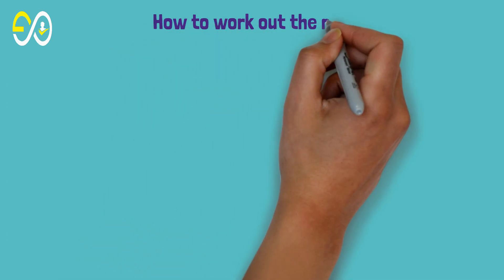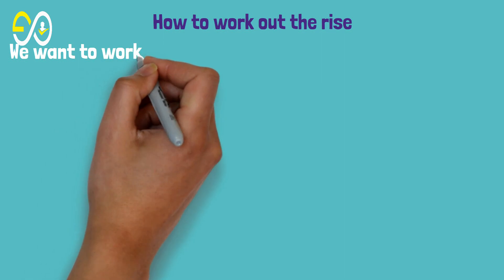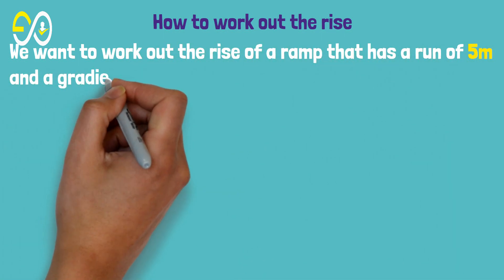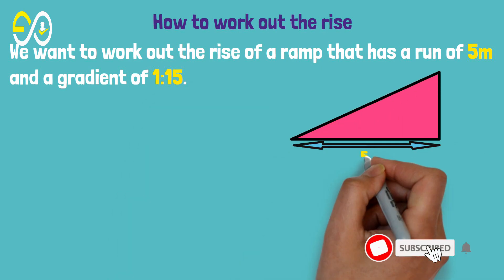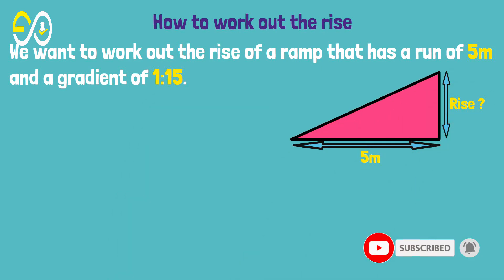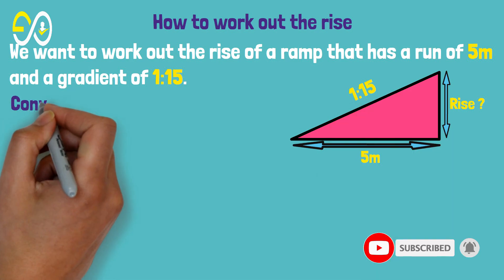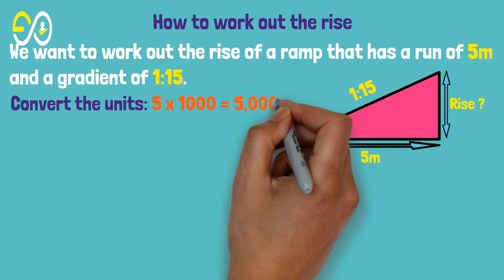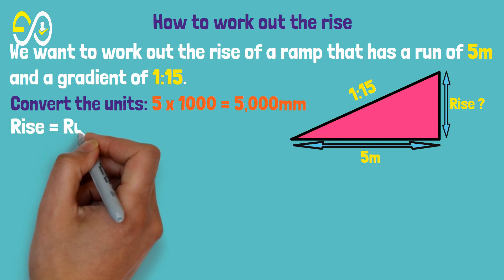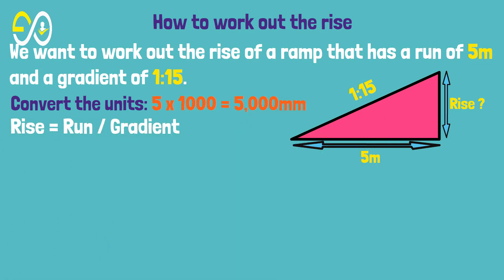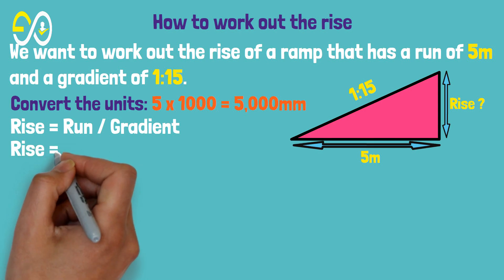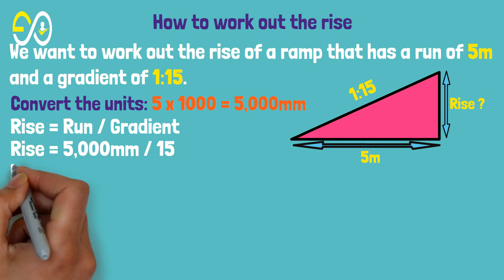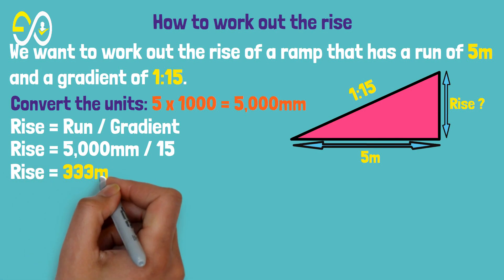How to work out the rise? We want to work out the rise of a ramp that has a run of 5 meters and a gradient of 1 in 15. Convert the units: 5 times 1000 equals 5,000 millimeters. Rise equals run over gradient. Rise equals 5,000 millimeters over 15. Rise equals 333 millimeters.